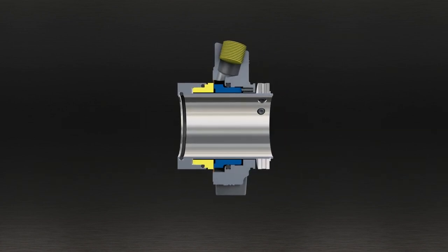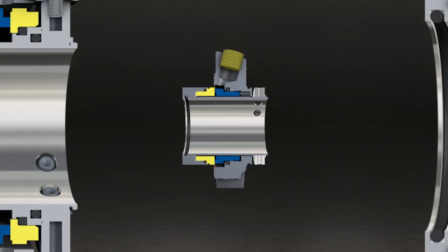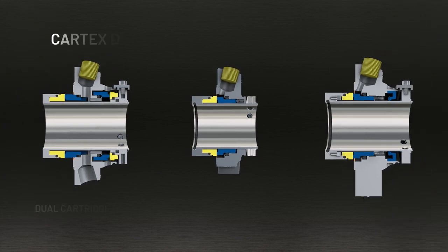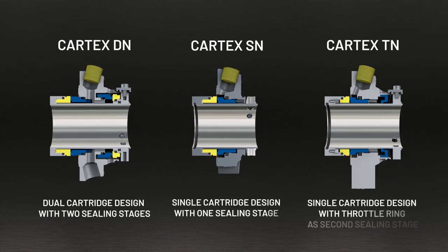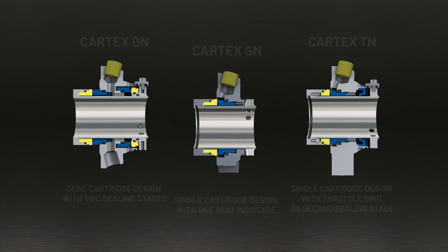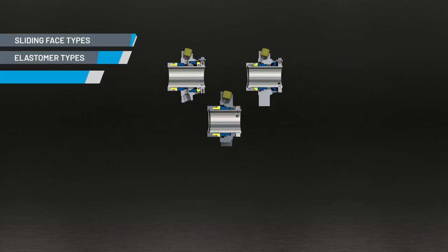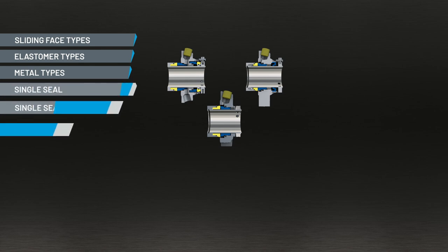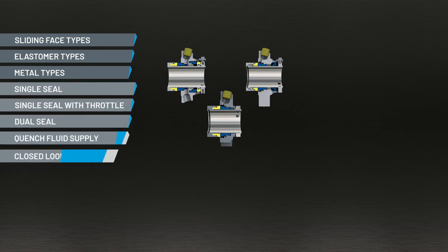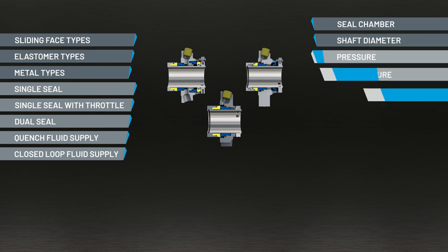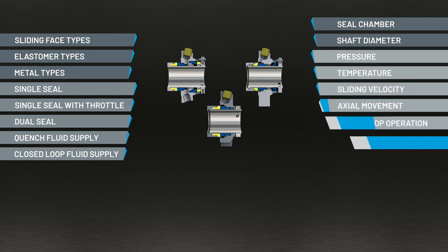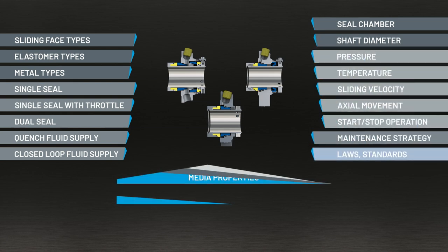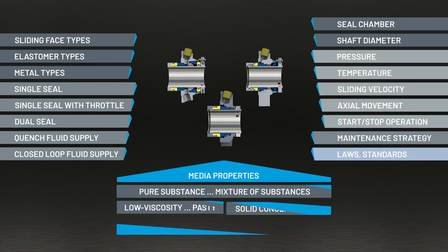According to the technical and legal requirements and the necessary operating safety, different designs and concepts for mechanical seals are utilized. Numerous factors, which also influence each other, play a role in seal selection: the process conditions, the sealing point on the machine, the operating conditions and the medium to be sealed.